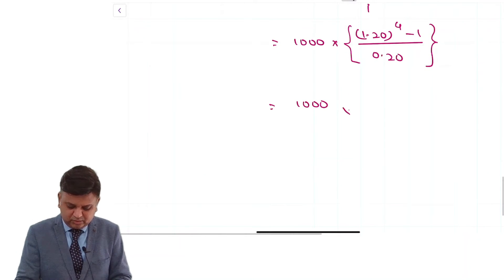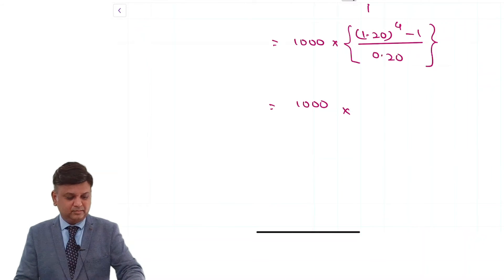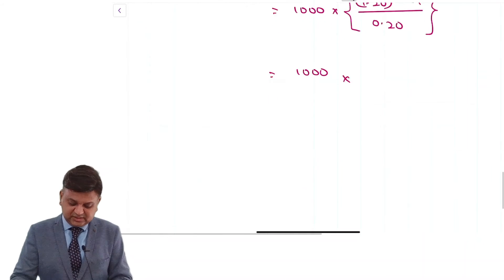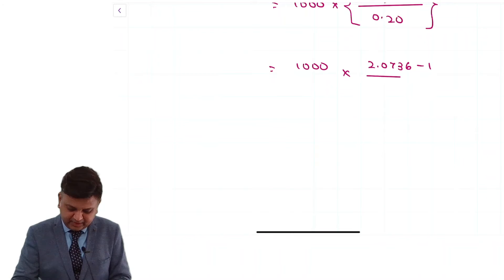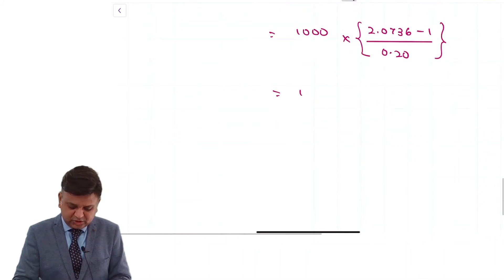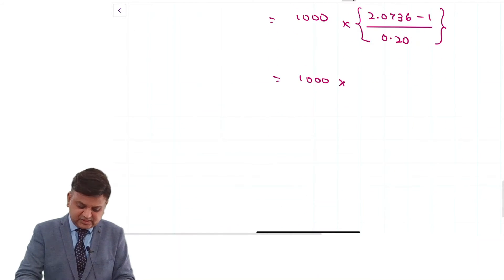So it is 1000 into 1.20 raised to 4 minus 1 whole divided by 0.20. So it is 1000 into 1.20 raised to 4, 2.0736 minus 1 divided by 0.20. So it is 1000 into 2.0736 minus 1, 1.0736 divided by 0.2, 5.368.